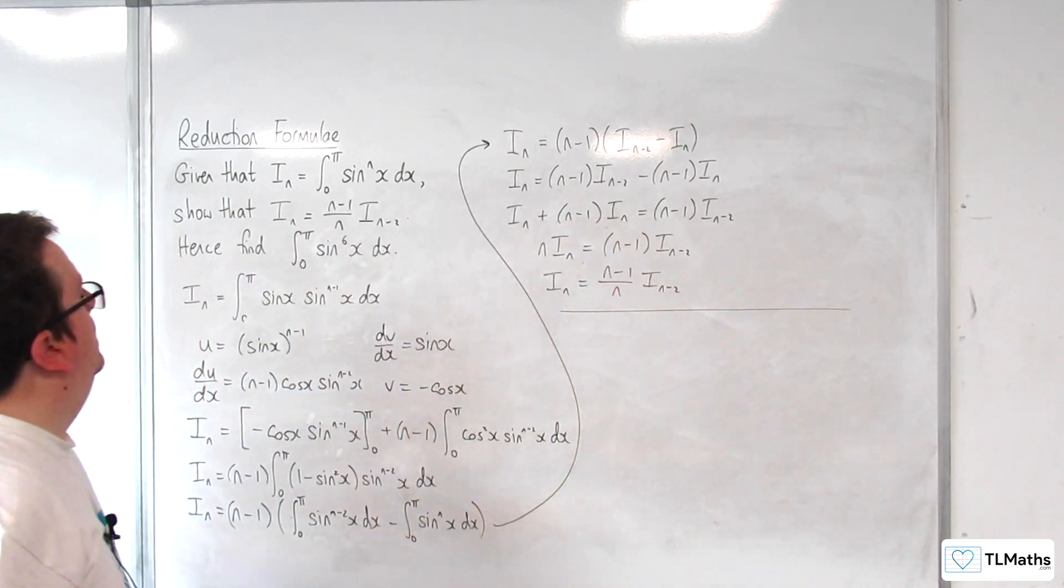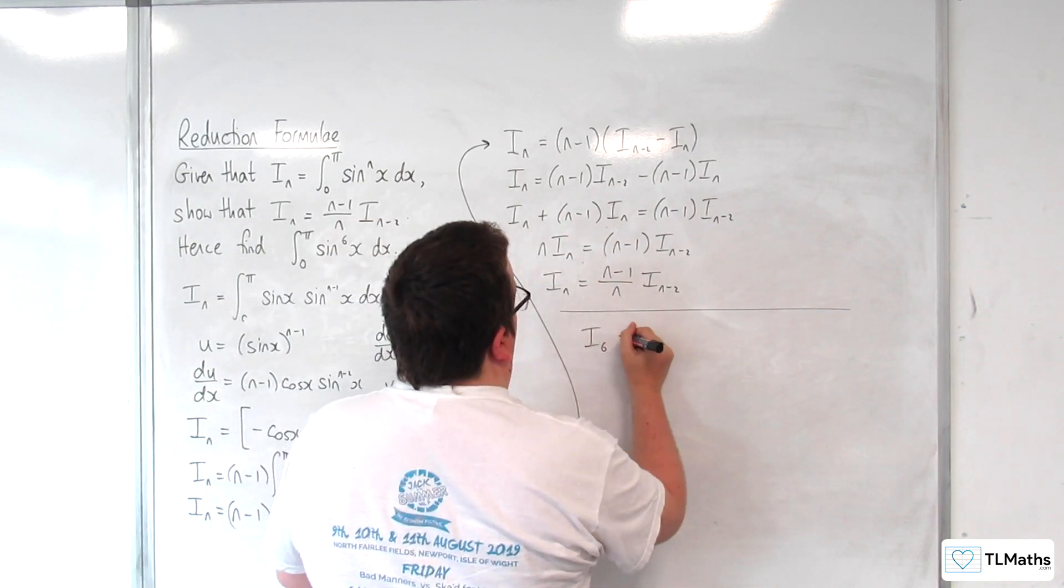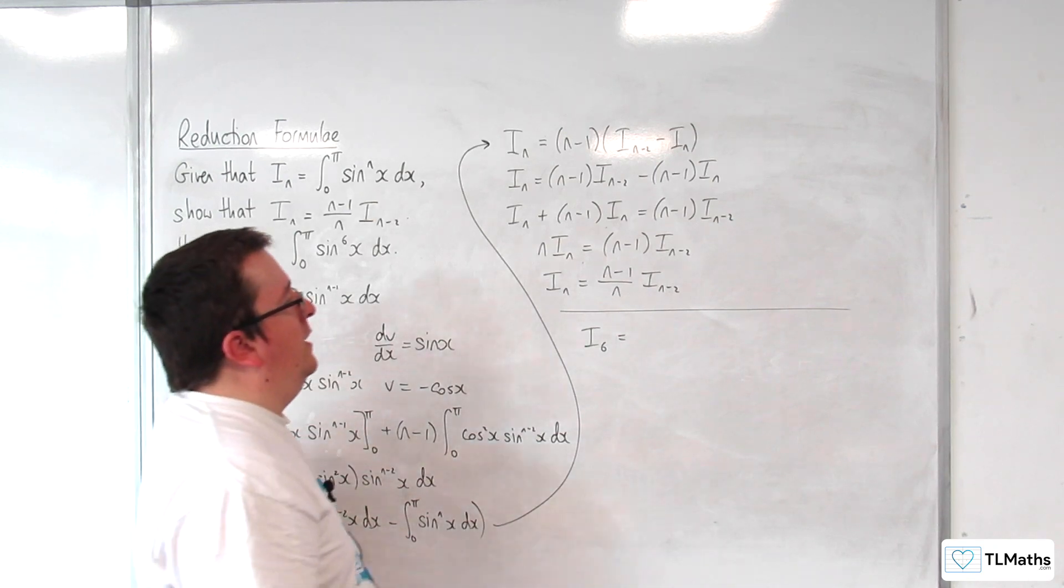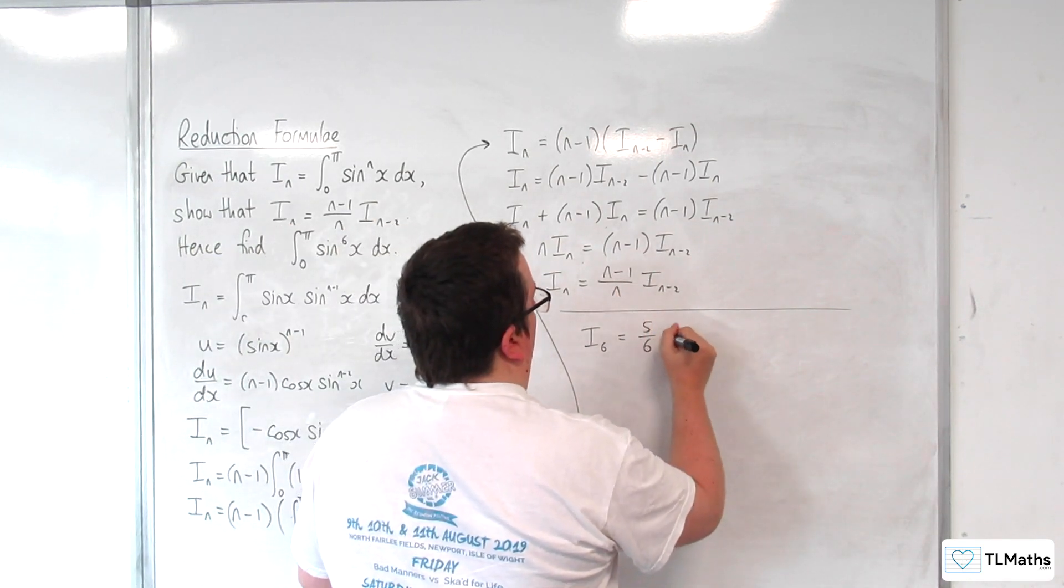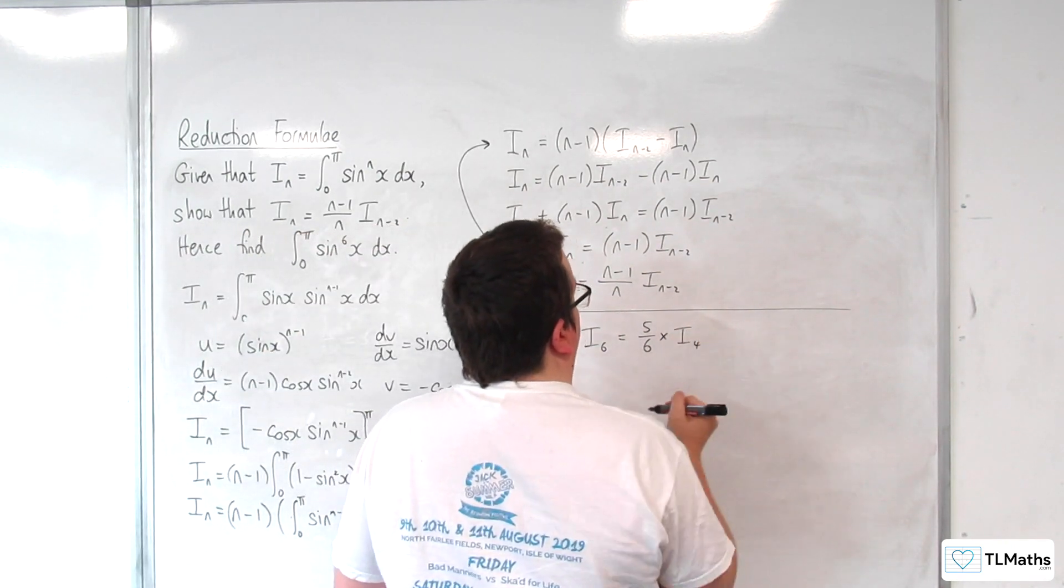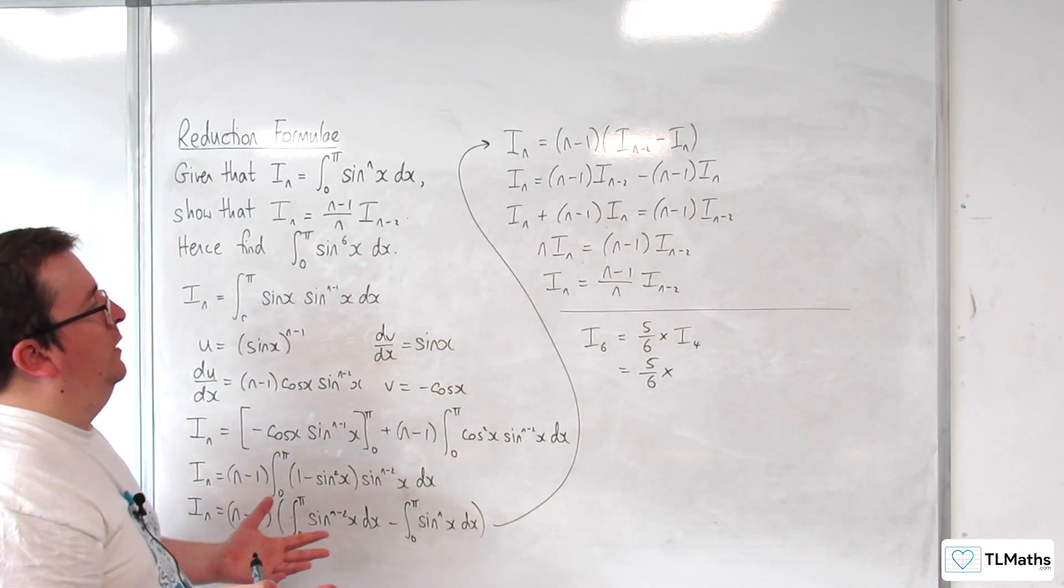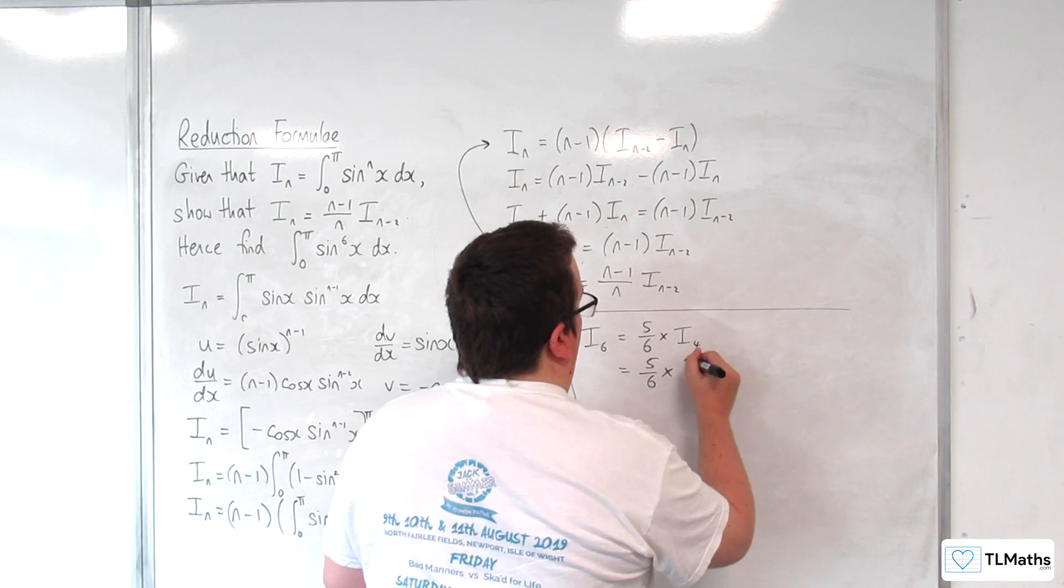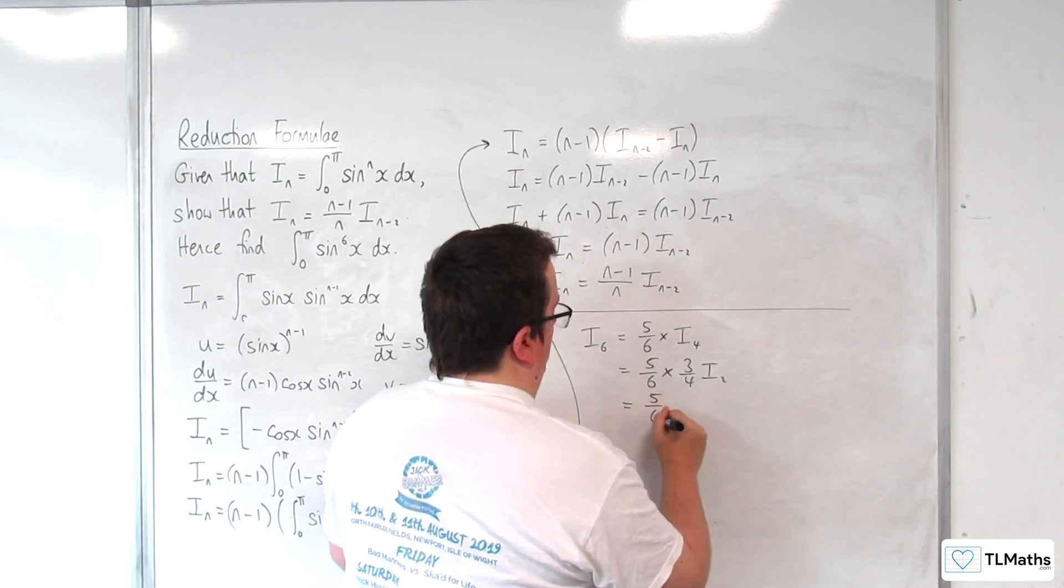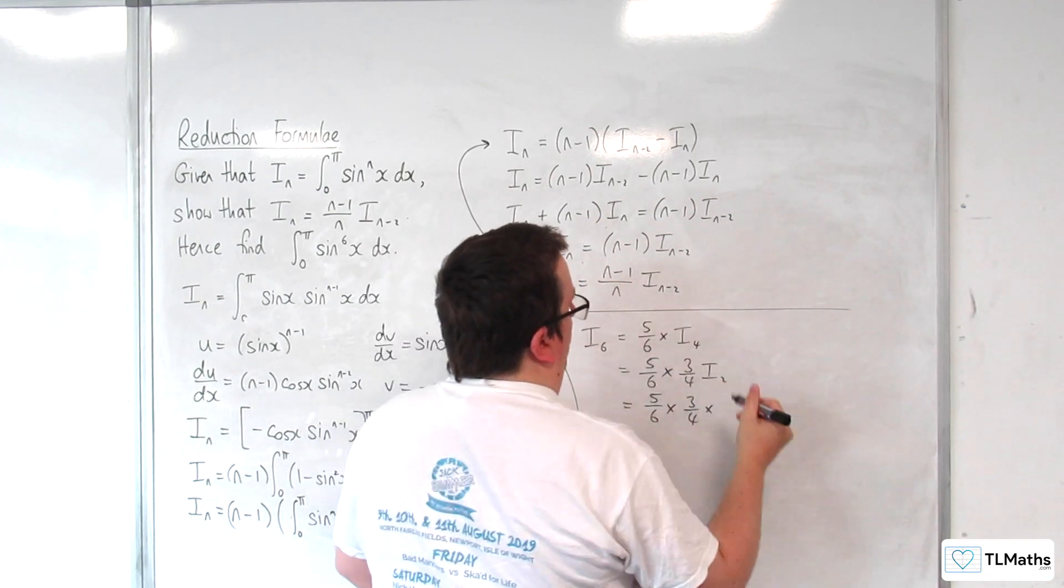So then to evaluate this integral here, this is I_6 because n is 6. So we're going to have 5/6 times I_4, which is 5/6 times 3/4 times I_2. And I_2 would be 1/2 of I_0.